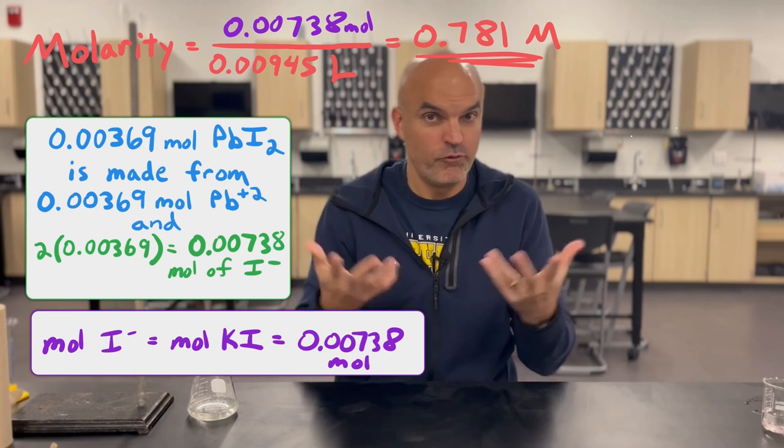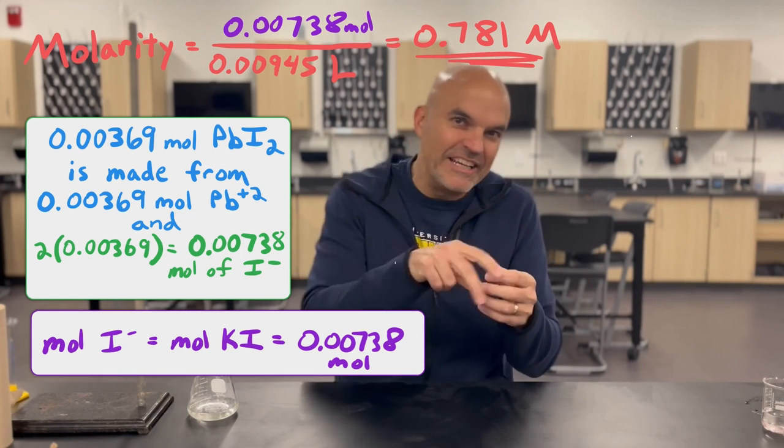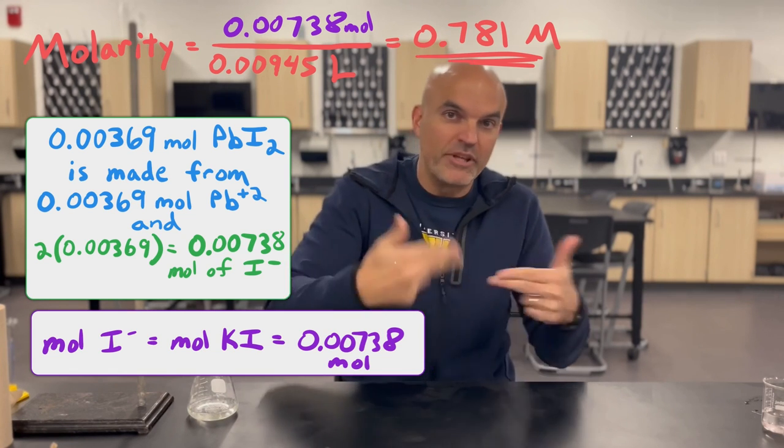That is how you can use gravimetric analysis to find an unknown molarity of a solution. It really hinges on forming a precipitate — getting those iodide ions out of solution so that you can weigh them, do a backward calculation, and find the moles. Gravimetric analysis almost always requires a precipitate. You use the calculation to get back to your moles, divide by the original liters, and you've got the concentration. The water rinsings were very important and you can't skip those steps, otherwise you'll introduce errors. Think about: what errors would you introduce if you didn't rinse the precipitate well? Thanks for watching — hopefully gravimetric analysis makes a lot of sense now.